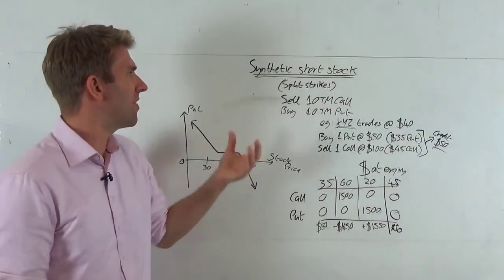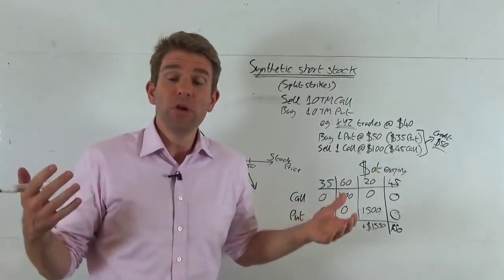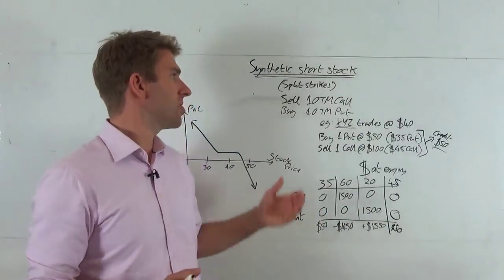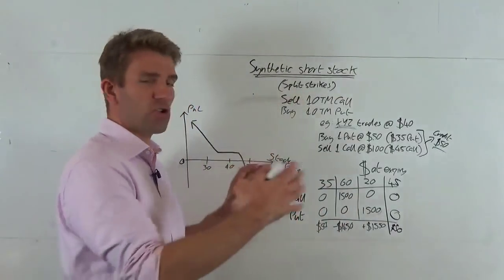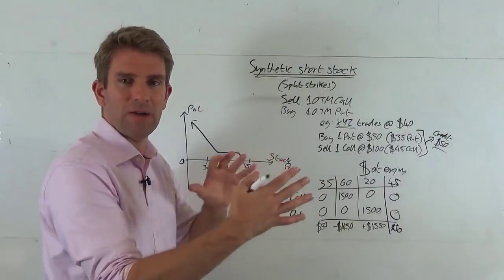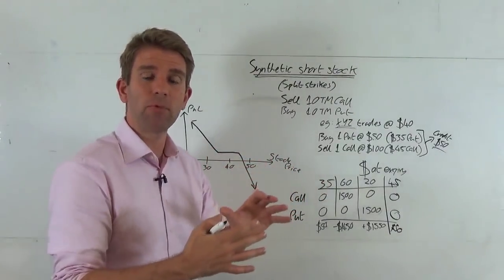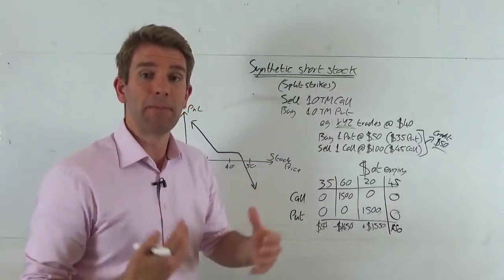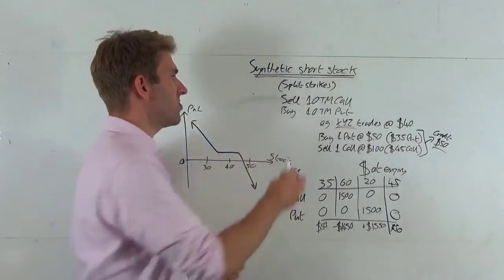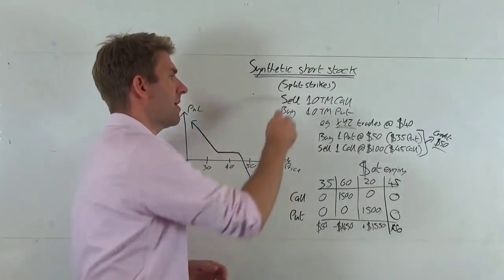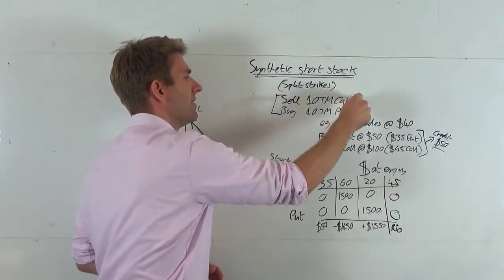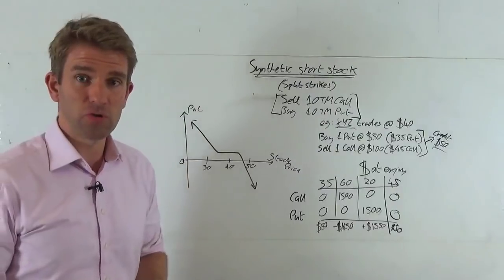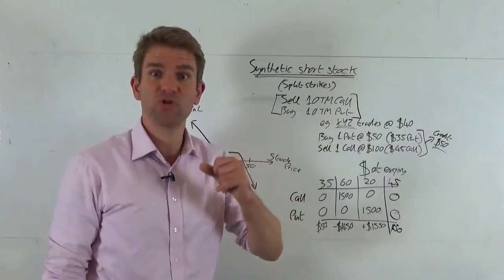Why create a synthetic short stock position? You might not be able to short the stock or borrow the shares. Also, creating this split strike changes the dynamics slightly, so if you have a different thesis on what's going to happen with the stock, you can express that and get paid for being right. We sell one out-of-the-money call and buy one out-of-the-money put — that's the split strike synthetic short stock structured spread trade.